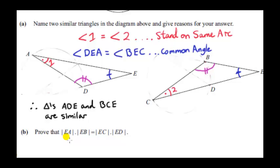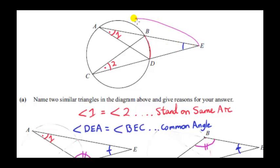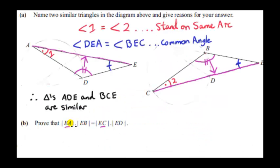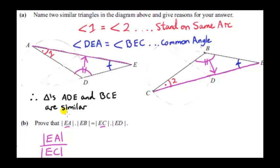Next we will prove that EA times EB equals EC times ED. If we multiply EA by EB we get the same result as multiplying EC by ED. Looking at sides EA and EC: they are opposite the same angle in both triangles, so they are corresponding sides. We take the ratio EA divided by its corresponding side EC in the second triangle — that ratio is the same for all corresponding sides.